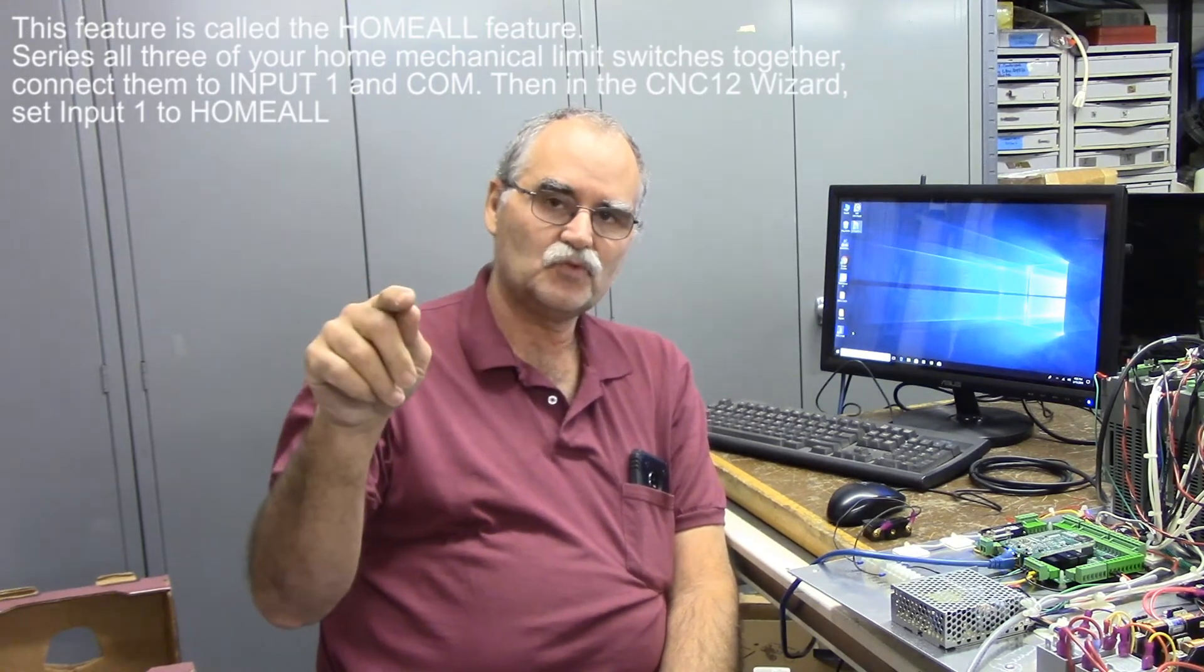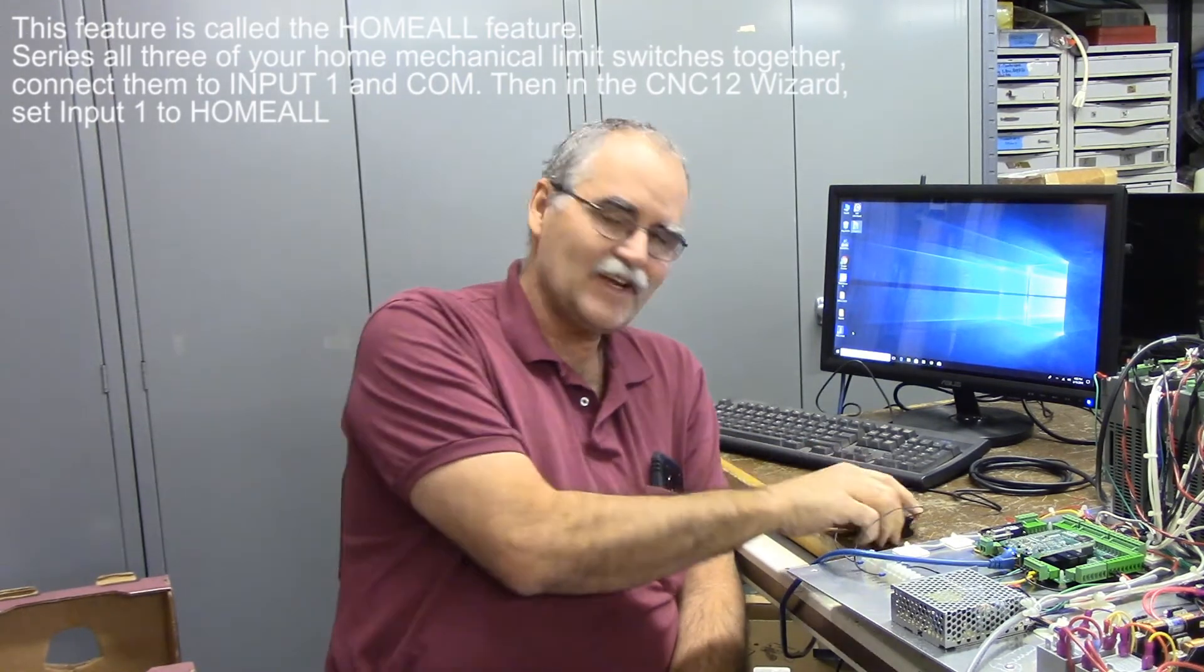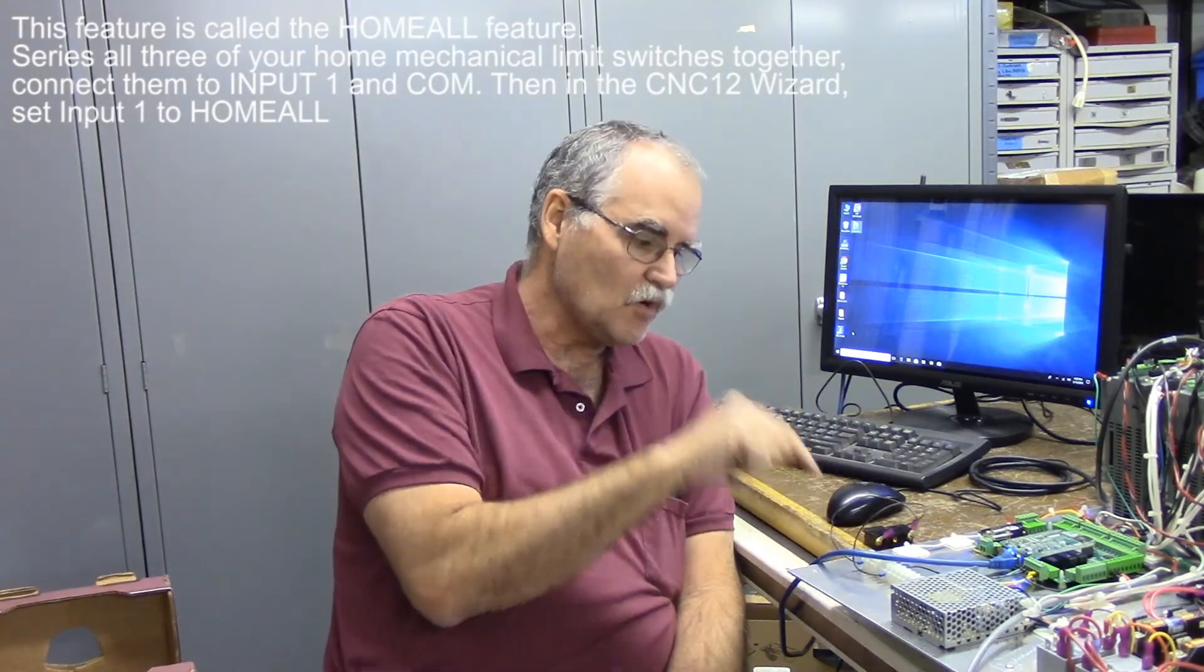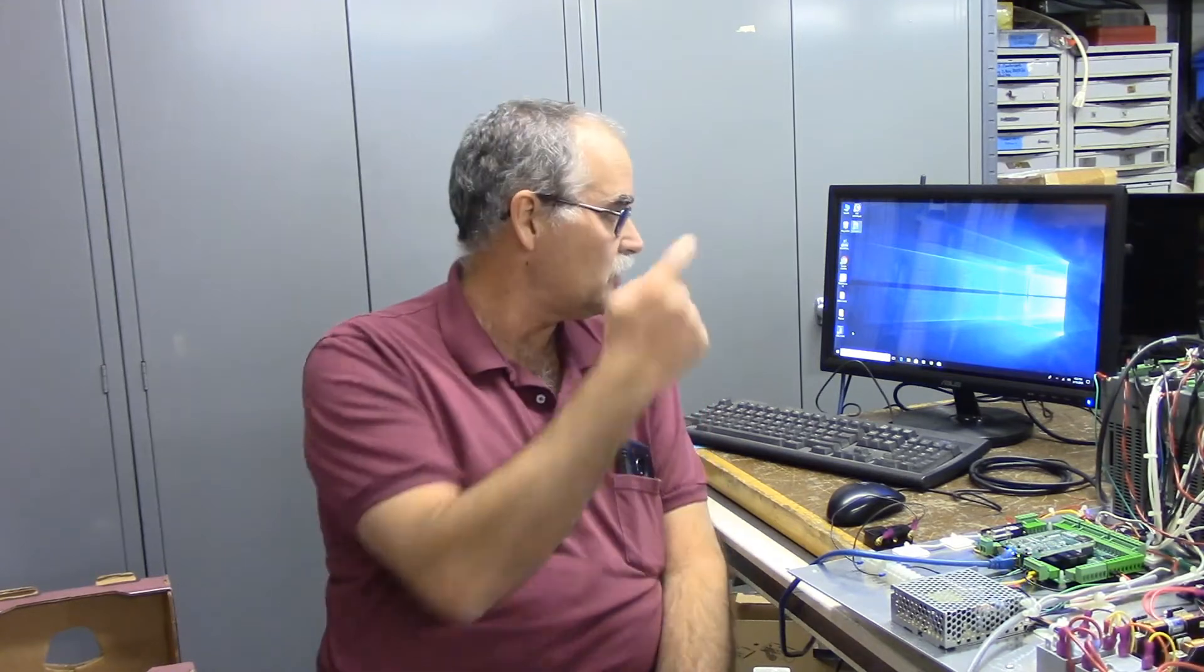I've only got one right now so I'm gonna have to hit it three times, but it's going into input one. So it's going to simulate the axis - the motors will move the axis back as if we're hitting the mechanical switch. I'll hit the switch and then it'll move forward and it'll start looking for the index pulse on that particular axis encoder. Actually, I'm going to put you up to the monitor here and we'll start CNC12 and then we'll do the homing exercise.